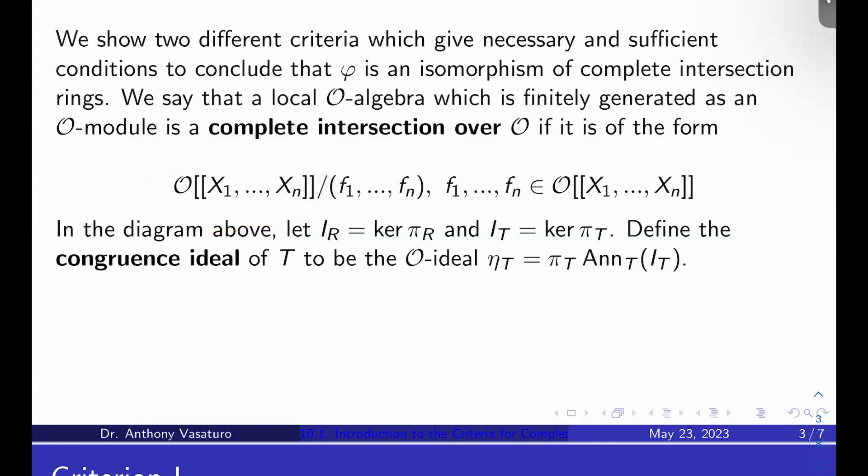And the key here is you have to notice that the number of functions we're modding out by is equal to the number of variables here. That's what it means to be a complete intersection, essentially. So number of generators equals number of relations.